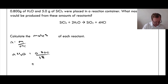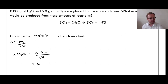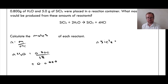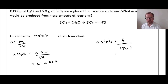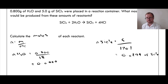0.80 ÷ 18 = 0.044 moles of H₂O. Now calculate the moles of SiCl₄: N = 5 ÷ Mr. The Mr of SiCl₄ is 170.1, so 5 ÷ 170.1 = 0.0294 moles of SiCl₄.